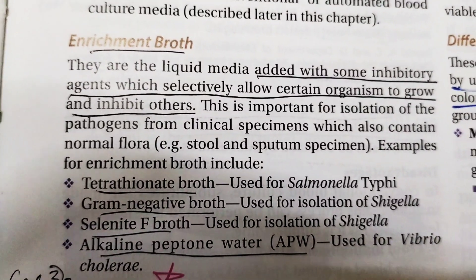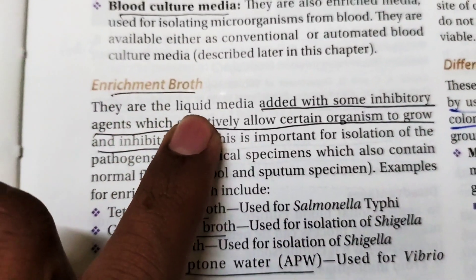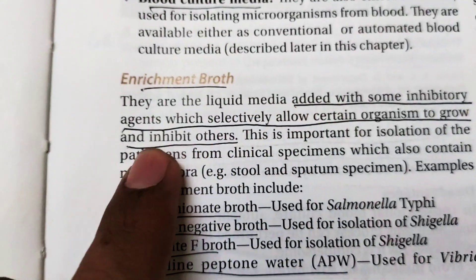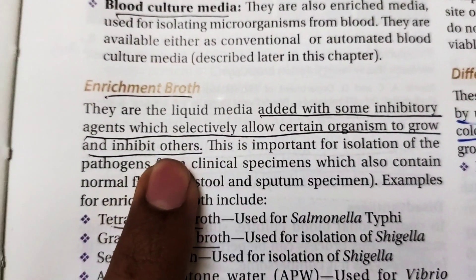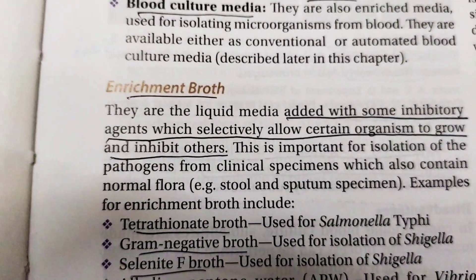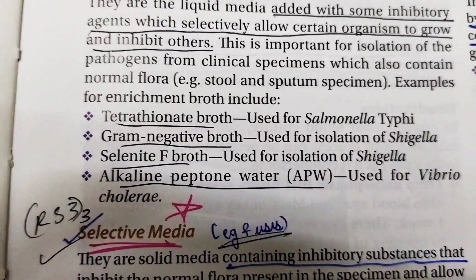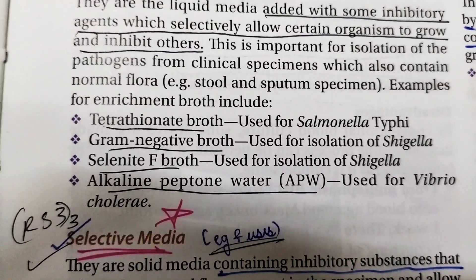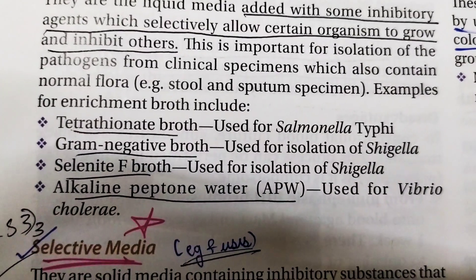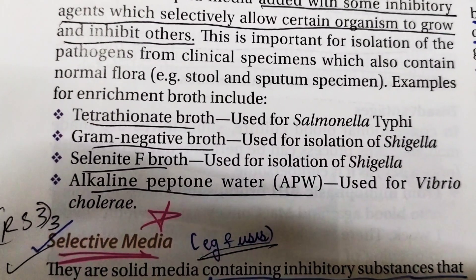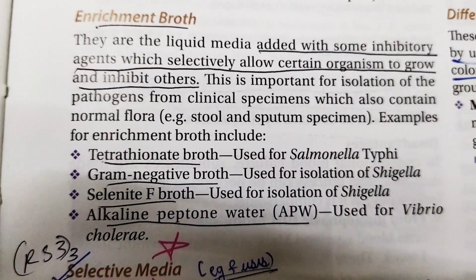Enrichment broth is a liquid medium with some inhibitory agent added, which selectively allows certain organisms to grow and inhibits others. Examples include: tetrathionate broth for Salmonella typhi, Gram-negative broth for isolation of Shigella, Selenite F broth for isolation of Shigella, and alkaline peptone water for Vibrio cholerae.